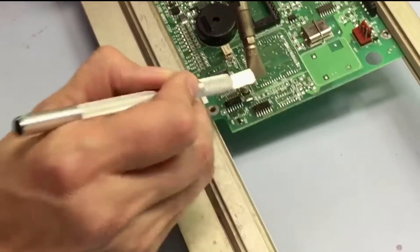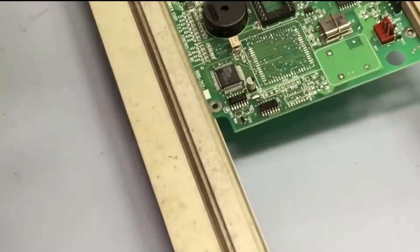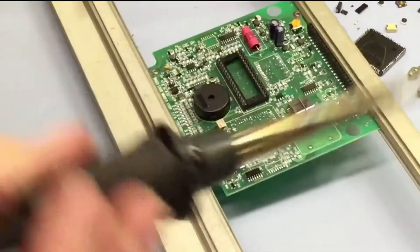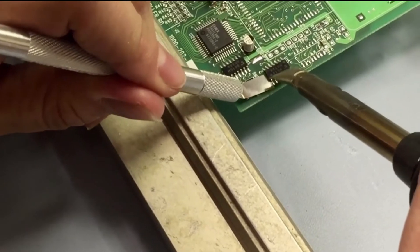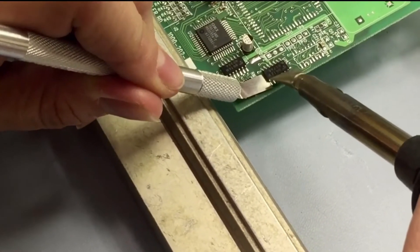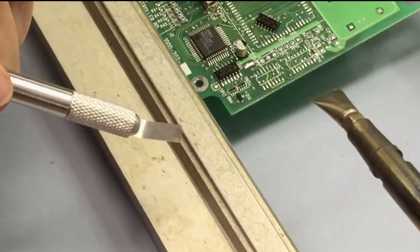...right under there. Now we'll work on the other side. Put our shim tool under there, and this one usually flows a little bit faster once the other side goes. As you can see, it popped right off.